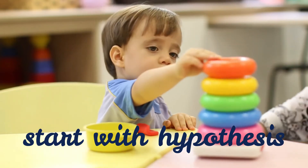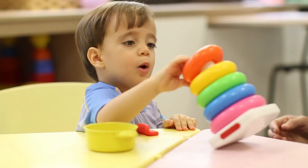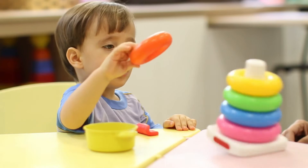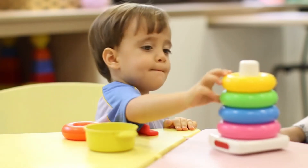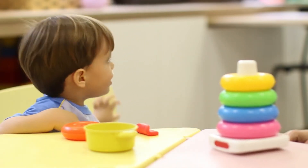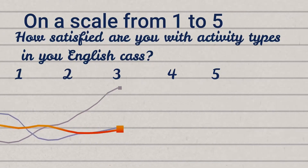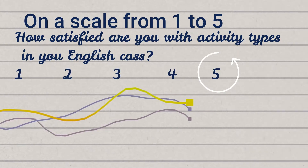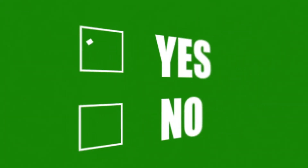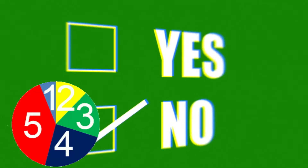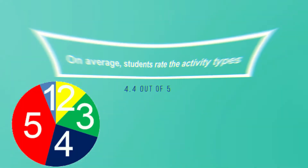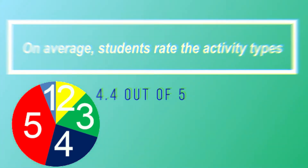Start with a hypothesis. Let's say you want to know if your students are satisfied with the grouping practices and activity types you use in your English class. You can survey all of your students by asking: How satisfied are you with activity types in your English class? When drawing a conclusion, your hypothesis will be supported. On average, students rate the activity types 4.4 out of 5.